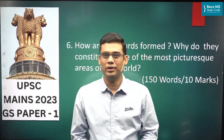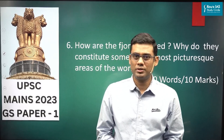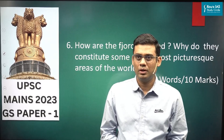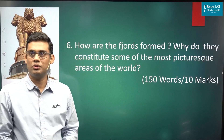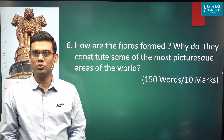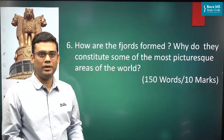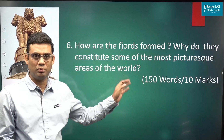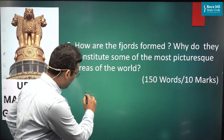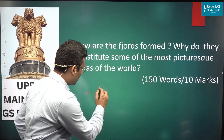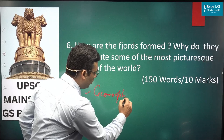GS Paper 1 geography section, question number 6, which asked how fjords are formed and why they constitute some of the most picturesque areas of the world. This question carried 10 marks and has to be written within the word limit of 150 words. This question was from the broad section of geomorphology.